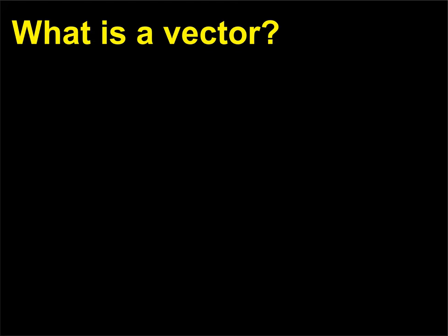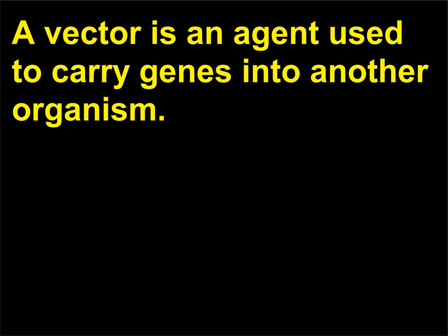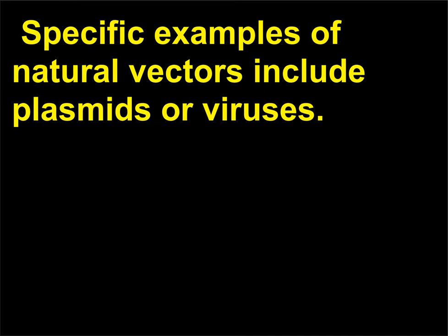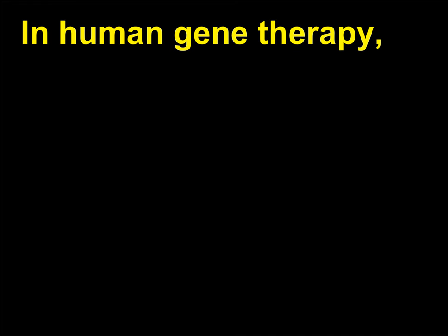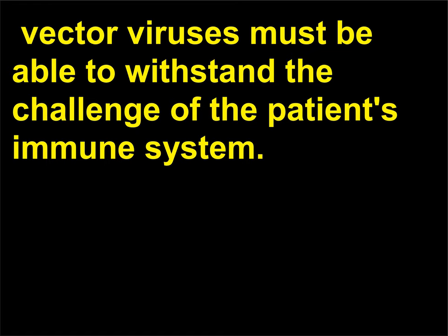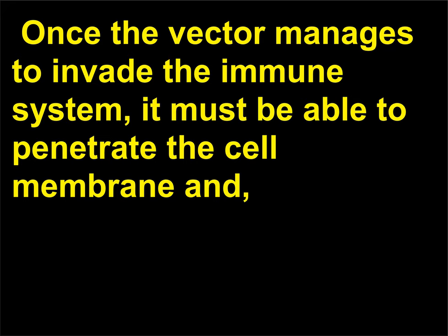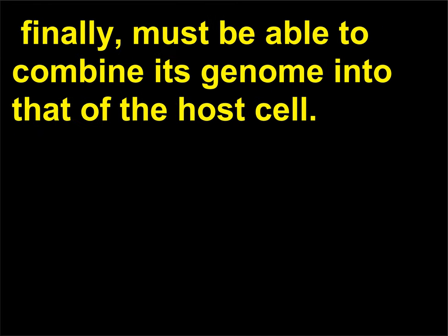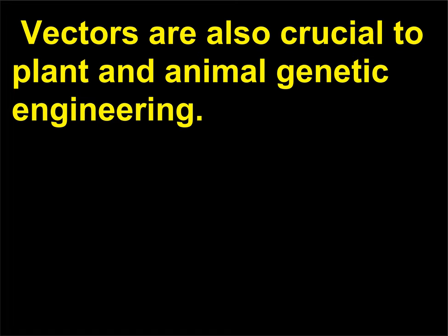What is a vector? A vector is an agent used to carry genes into another organism. Specific examples of natural vectors include plasmids or viruses. In human gene therapy, vector viruses must be able to withstand the challenge of the patient's immune system. Once the vector manages to invade the immune system, it must be able to penetrate the cell membrane and, finally, must be able to combine its genome into that of the host cell. Vectors are also crucial to plant and animal genetic engineering.